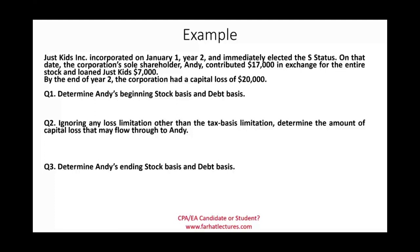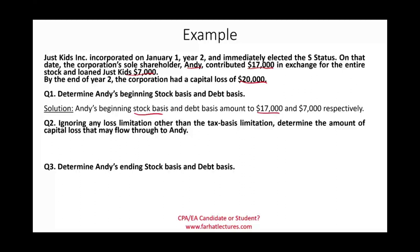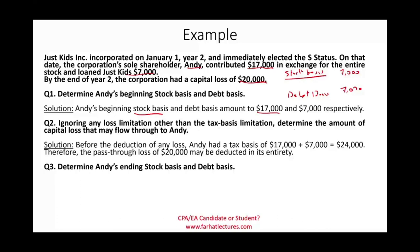Let's look at an example. Just Kids Inc. was incorporated on January 1st of Year 2 and immediately elected S status. On that date, the sole shareholder Andy contributed $17,000 in cash and loaned the company $7,000. By the end of Year 2, the corporation has an ordinary income loss of $20,000. Andy's beginning stock basis is $17,000 (the cash contributed) and the debt basis is $7,000 (the loan), for a total tax basis of $24,000.